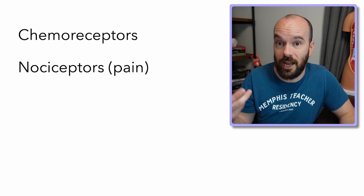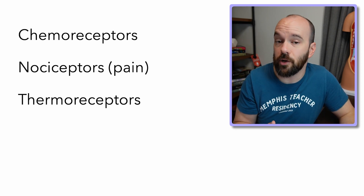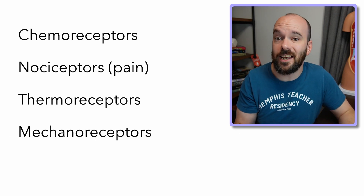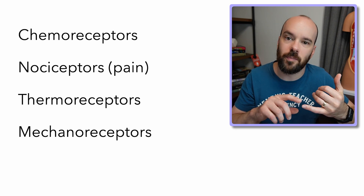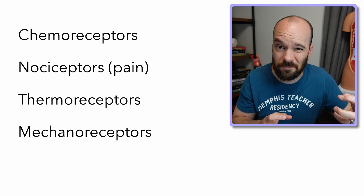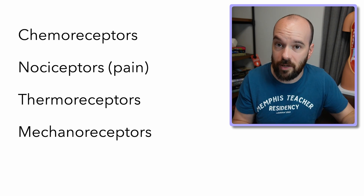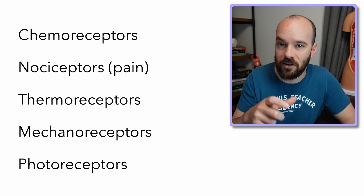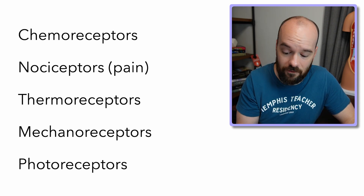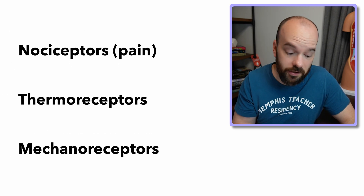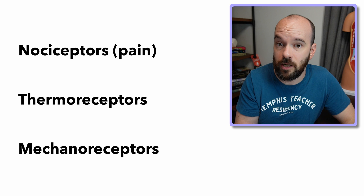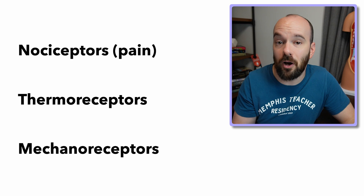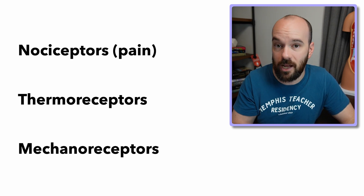Our brain interprets those nociceptor signals as pain. We also have thermoreceptors, which detect temperature — with different receptors for cold and for warm. Mechanoreceptors detect any sort of physical change, like light touch, deep pressure, or stretching. Most of the receptors in our skin are mechanoreceptors. Finally, we have photoreceptors, mostly found in our eyes, which detect light. So the three main receptor types we'll focus on with the skin are nociceptors for pain, thermoreceptors for temperature, and mechanoreceptors for physical changes and movement.